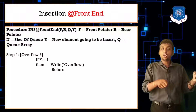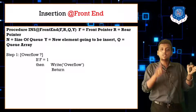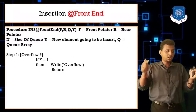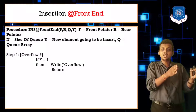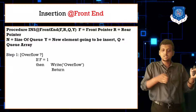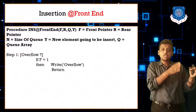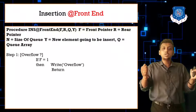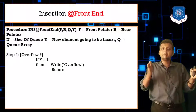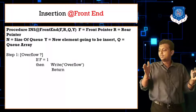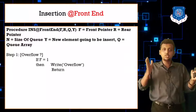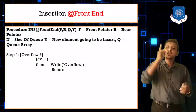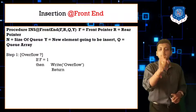If front pointer is at 1 you cannot do any insertion — return directly. The next condition: if front pointer is at 0, that means the queue is empty, and both front and rear are at 0. When queue is empty, move both front and rear to 1 and assign Q of F equals Y.